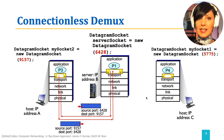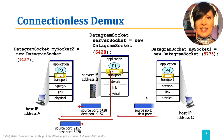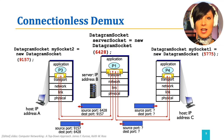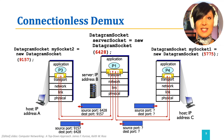Can you come up with the source and destination port numbers used for communication between process P1 on server B and P4 on server C?